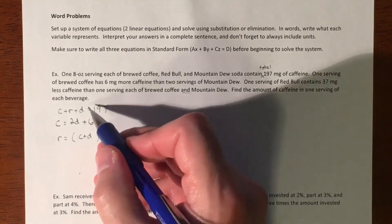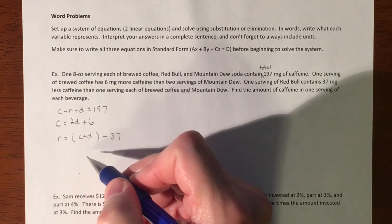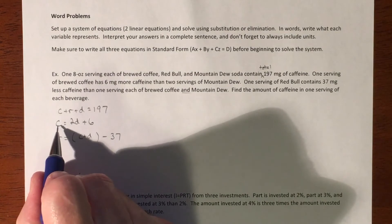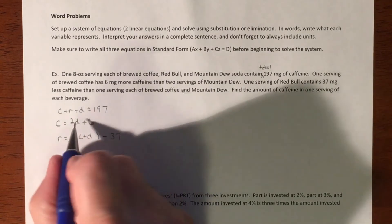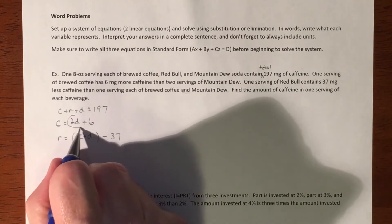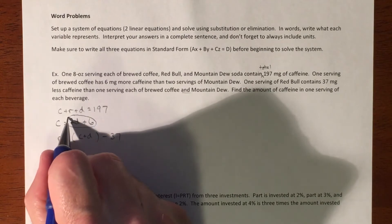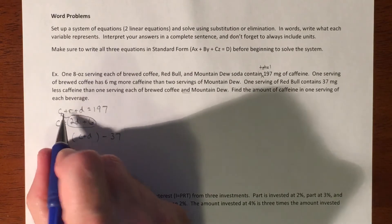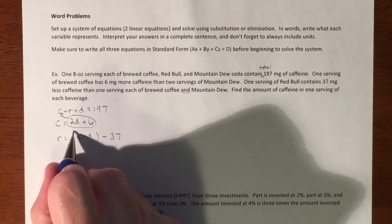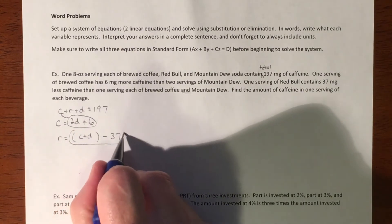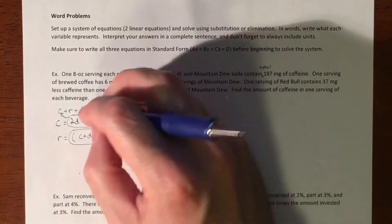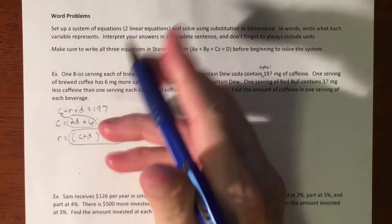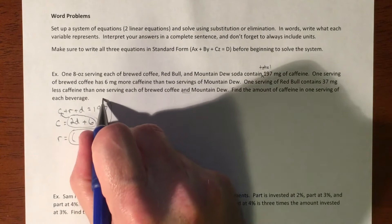So our situation is here are technically our three equations with three variables, but they tell me what my C equals and they tell me exactly what my R equals. So I'm just going to plug stuff in. So I'm going to substitute. So I'm going to take the fact that I know what C equals and I'm going to plug it in right there. I know what R equals, so I'm going to plug that in.